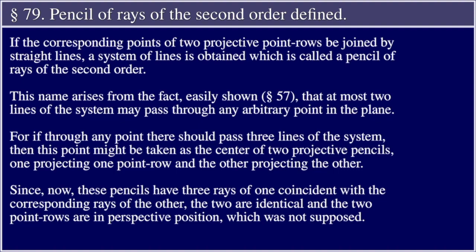Section 79: Pencils of Rays of the Second Order Defined. If the corresponding points of two projective point rows be joined by straight lines, a system of lines is obtained which is called a pencil of rays of the second order.